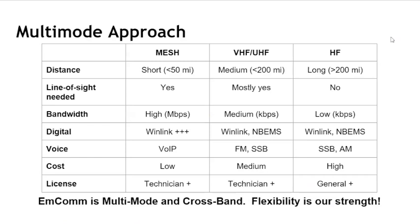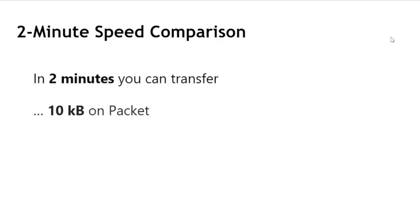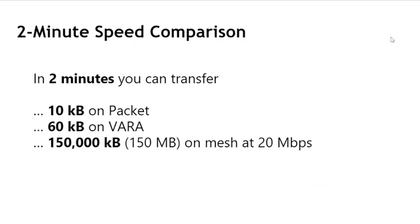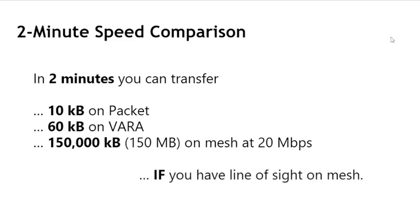Emergency communications in our world is multi-mode and cross-band, and we consider flexibility a great strength of amateur radio. 10 kilobytes is generally a text or CSV file. 60 kilobytes gets you Word documents or small images. 150,000 kilobytes is a lot of data to move in a short time. But that all depends on having line of sight on mesh — if you don't have that, you're back to using VHF/UHF.